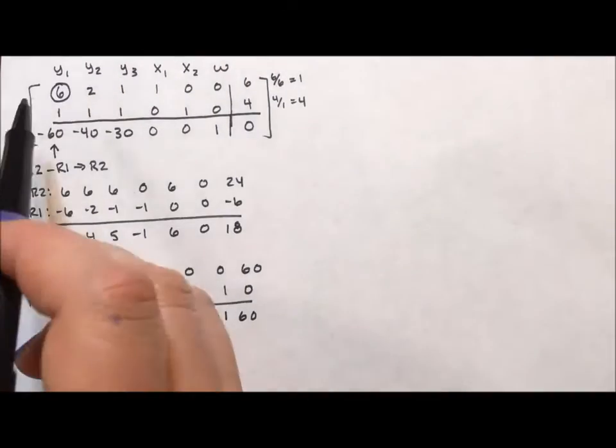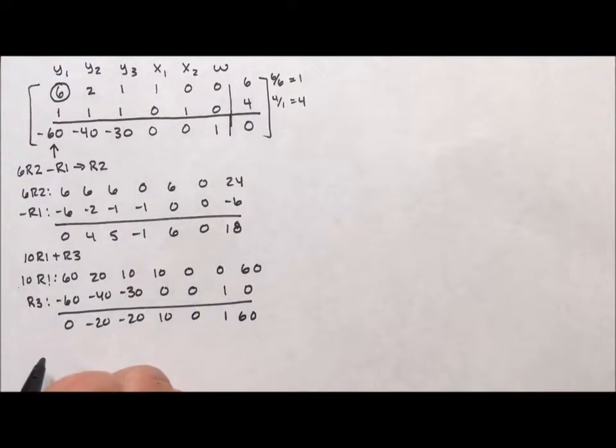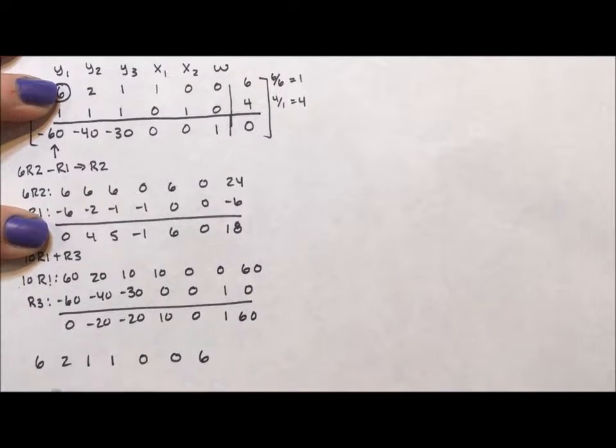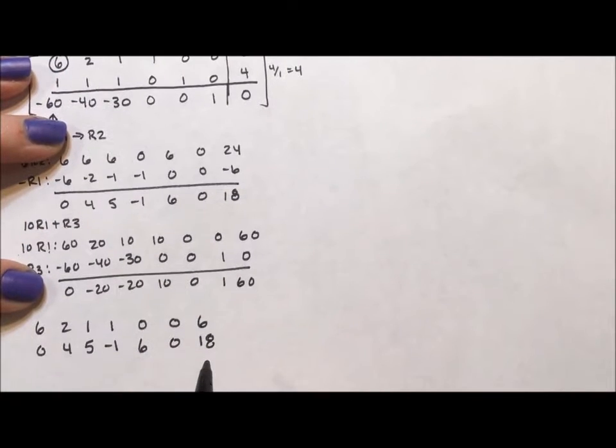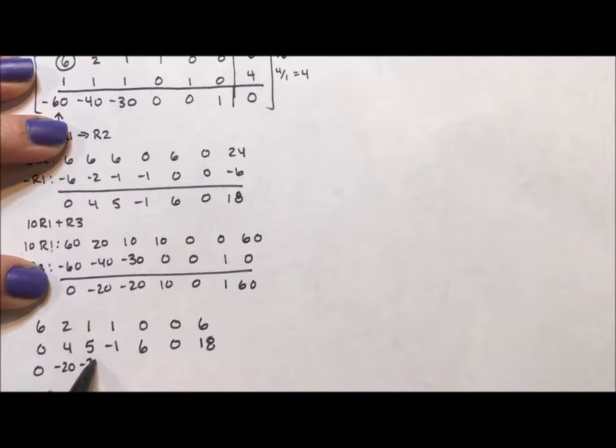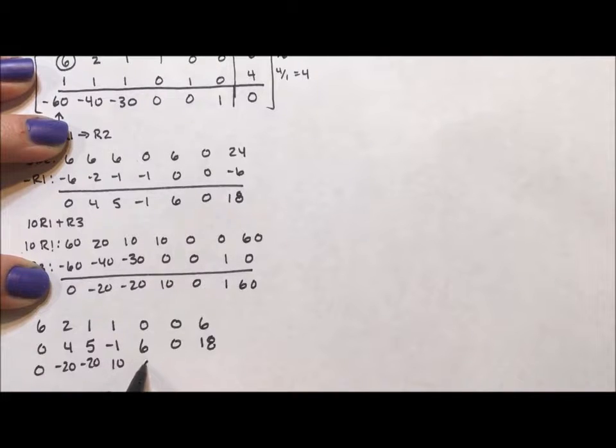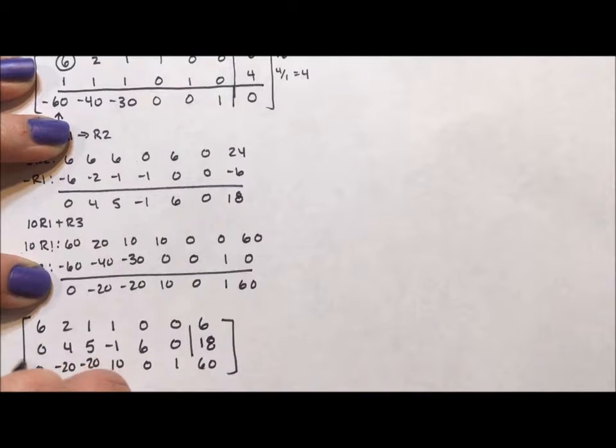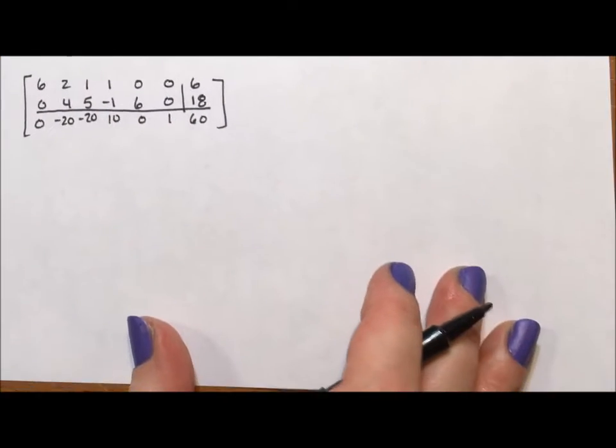Okay, so we didn't change our first row. So the first row of our next tableau is going to stay 6, 2, 1, 1, 0, 0, 6. My second row is going to become this second row, this 0, 4, 5, negative 1, 6, 0, 18. And the third row is going to be 0, negative 20, negative 20, 10, 0, 1, 60. I made that a lot squishier than I normally make them. Okay, so this right here is my second tableau. There's still negatives below the line. There are actually two negatives below the line.